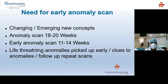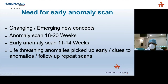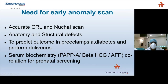The need for early anomaly scan arises from ever-changing and emerging new concepts. We started with anomaly scans at 18 to 20 weeks and then moved to early anomaly scan at 11 to 14 weeks — or more precisely 11 to 13 weeks, 6 days. Our target is to find life-threatening anomalies early or at least get clues so that we can do follow-up repeat scans. Even if suspicious at 11 to 14 weeks, we still have a window of four weeks before the anomaly scan to re-scan. We started by measuring accurate CRL and then moved on to fetal anatomy and studying structural defects.